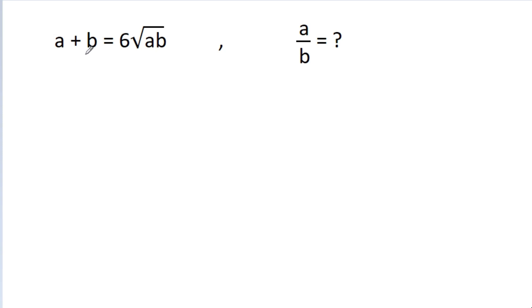We have given that a plus b is equal to 6 times the square root of ab. Then we have to find a by b.